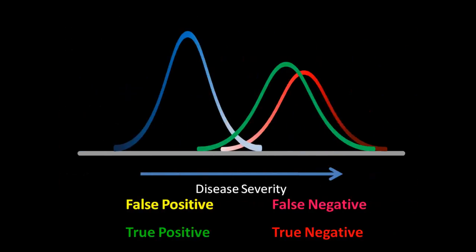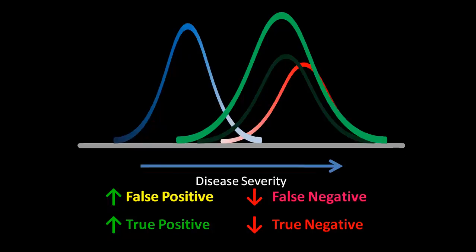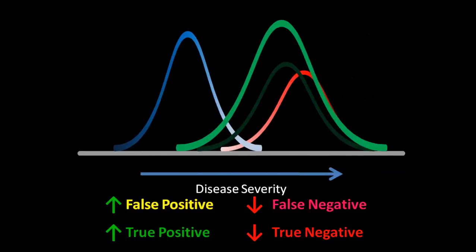A very sensitive test captures everybody in red. A test that's very sensitive has more true positives but also more false positives, and fewer false negatives and true negatives. Because it has fewer false negatives, a sensitive test is very good to rule out a disease when it's negative. But when it's positive, the chance of it being a false positive is higher, so we can't say for sure that the patient has the disease.